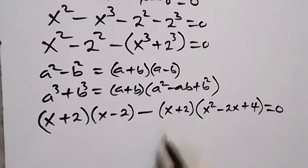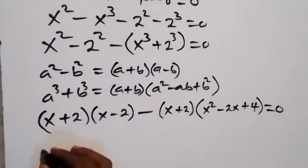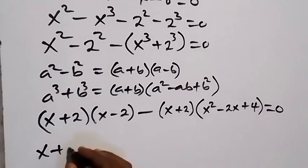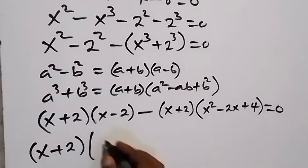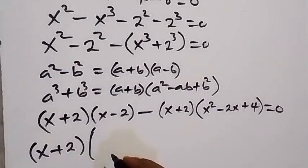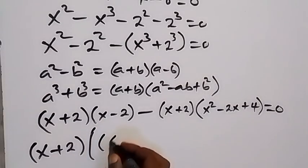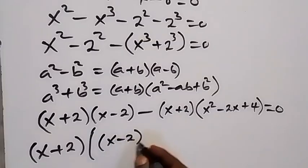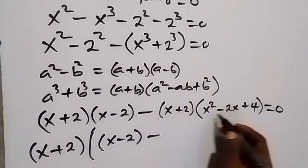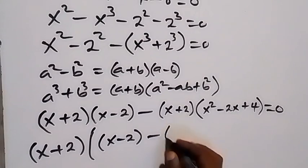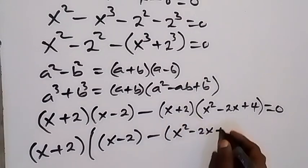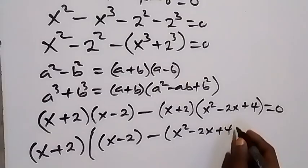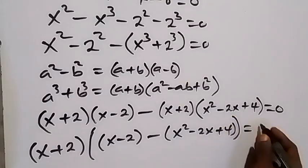From here, (x + 2) is common, so let's factor it out. We have (x + 2) outside the bracket. What remains inside is (x − 2) minus the quadratic expression, which is x squared minus 2x plus 4, giving us (x + 2)[(x − 2) minus (x squared minus 2x + 4)] equals zero.